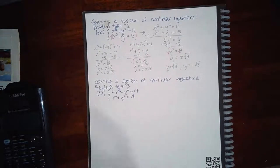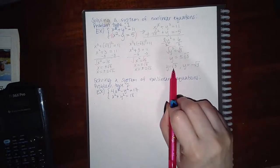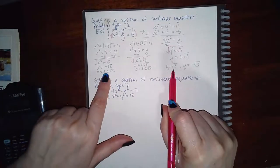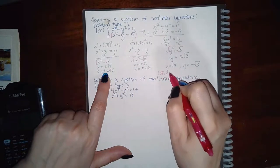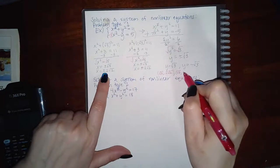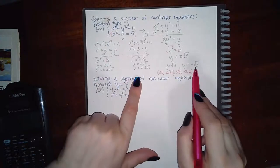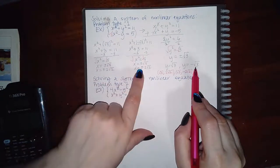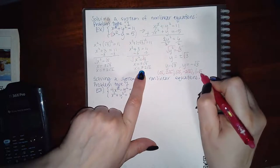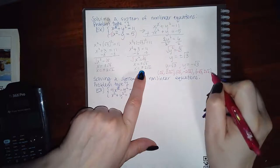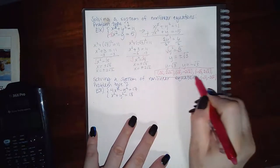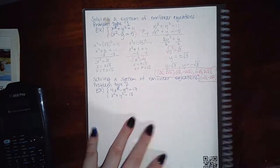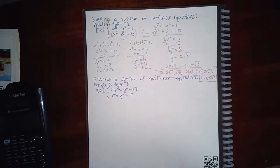Here's the interesting part — we end up with four answers. One y value gave two x values. So my solutions are: (2√2, √3), (-2√2, √3), (2√2, -√3), and (-2√2, -√3). We actually ended up with four solutions here, and you have to include all of them for the problem to mark you correct.